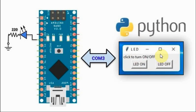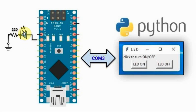The Python script on the host computer is interfaced to an Arduino Nano via COM3, and the LED is connected to digital pin D2 of the Arduino. Clicking on one button will turn on the LED, and clicking on the other button will turn off the LED.